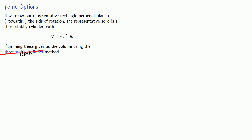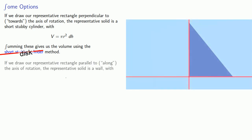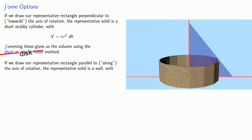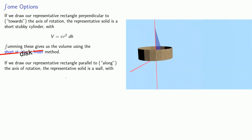On the other hand, if we draw our representative rectangle parallel to the axis of rotation, the representative solid is a wall. To find the volume of this wall, let's unwrap it so that it forms a slab. The length of this slab is the same as the circumference of our original circle, which will be 2 pi times some radius.